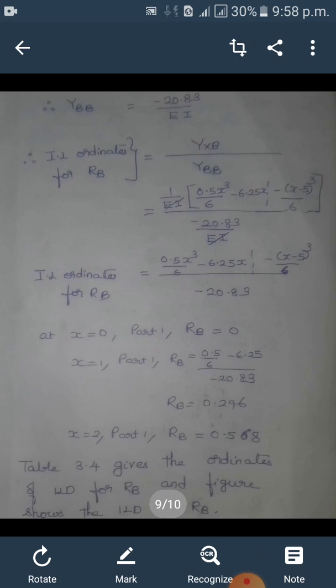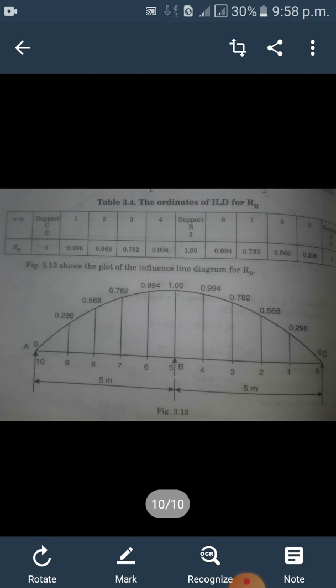We get IL ordinates for RB equals YxB divided by YBB. In the equation, you have to apply the values ranging from x equals 0, 1, 2 and so on till 10 meters. So the interval is 1 meter. The table gives the ordinates of RB for various values. You can see at C it equals 0, at A it equals 0, and at B it equals 1. If we consider from C, the values keep on increasing till the maximum value 1, then it decreases. And as it is symmetrical - AB equals BC - the values are the same.